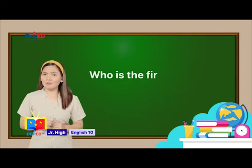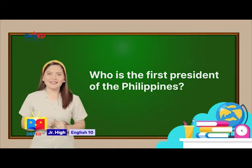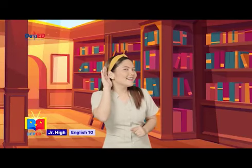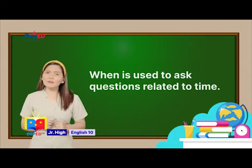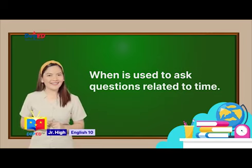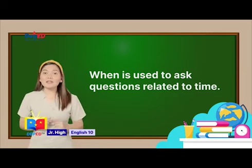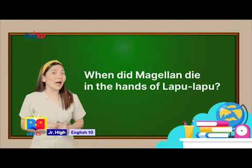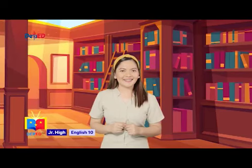Did you say Emilio Aguinaldo? You're right! When asking about questions related to time, we use WHEN. We could use it to ask about history — like, when did Magellan die in the hands of Lapu-Lapu? Magellan died on April 27, 1521.